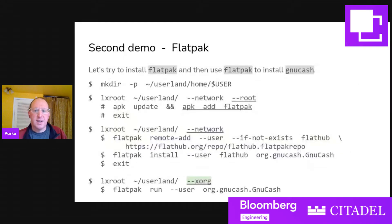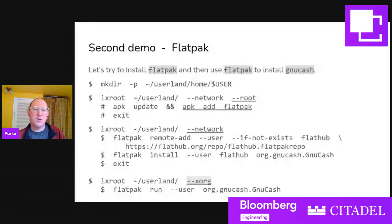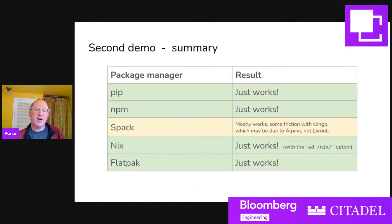Let's look at Flatpak. We're going to use Flatpak to install GNU Cash. In the --root virtual environment, we use APK to add Flatpak, then exit. Without --root, we use standard Flatpak commands to configure it and install GNU Cash using the --user option since it's a user installation, not a system-wide one. To run GNU Cash, I use a third LXroot virtual environment — without network access but with access to the Xorg server, since GNU Cash is a GUI program. GNU Cash runs. You could also give it network access and Xorg access simultaneously. Flatpak just works.